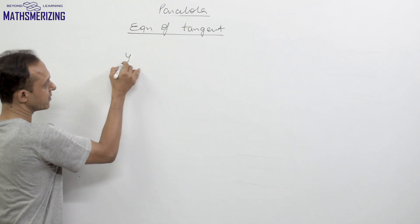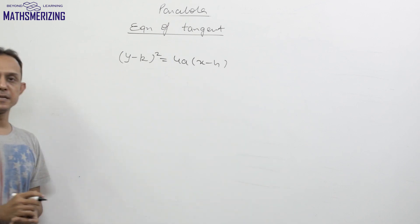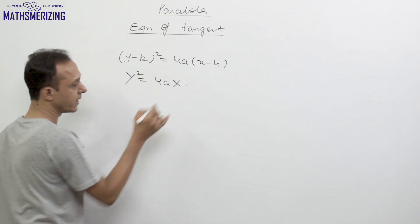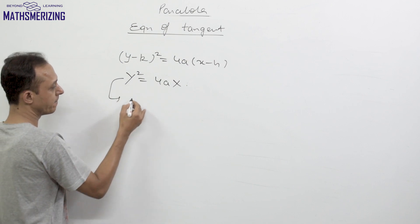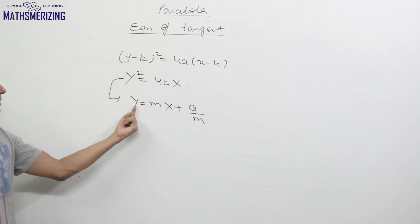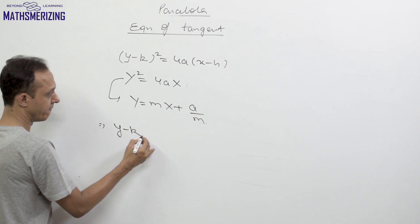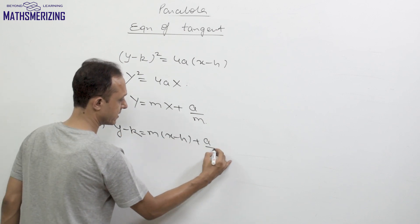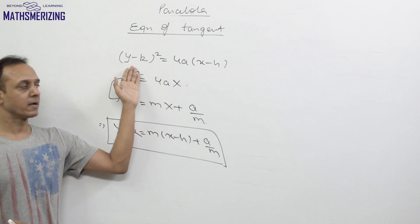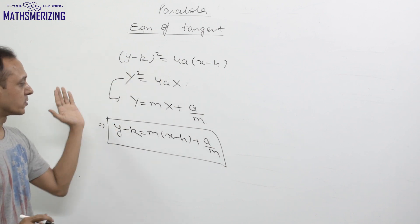Now, for a parabola whose vertex is shifted — for example (y - k)² = 4a(x - h) — we compare it with the standard form Y² = 4aX. For the standard parabola the tangent is y = mx + a/m, so we simply replace Y with y - k and X with x - h. This gives the equation of tangent as (y - k) = m(x - h) + a/m, which is the tangent to the parabola with vertex at (h, k). This approach works for any parabola whose axis is parallel to either the x-axis or y-axis.